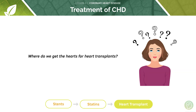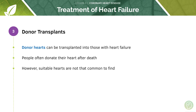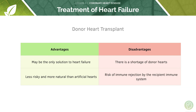Where do we get hearts for heart transplants? We have two options: donor hearts or artificial hearts. People often donate their heart after death, but suitable hearts are not common to find because we have to match hearts between individuals — you can't just take a heart from one person and put it into another. Various matching procedures reduce the chance of the heart being rejected by the body. The advantage is it may be the only solution to heart failure and is more natural than an artificial heart, but the disadvantage is that there isn't a surplus of donor hearts and the risk of immune rejection is quite high.